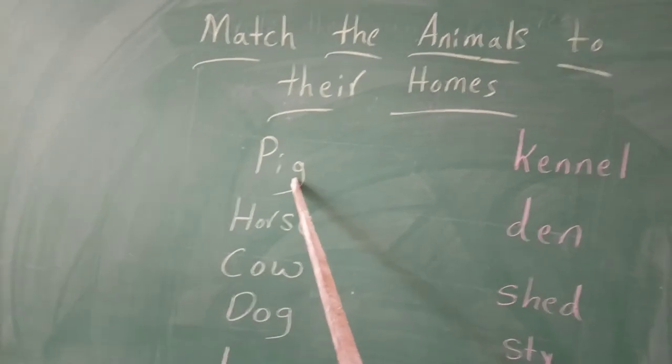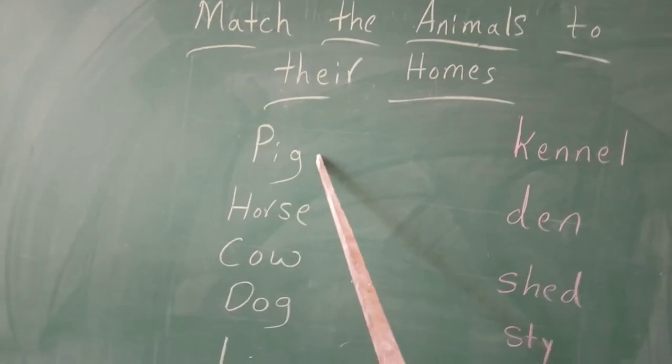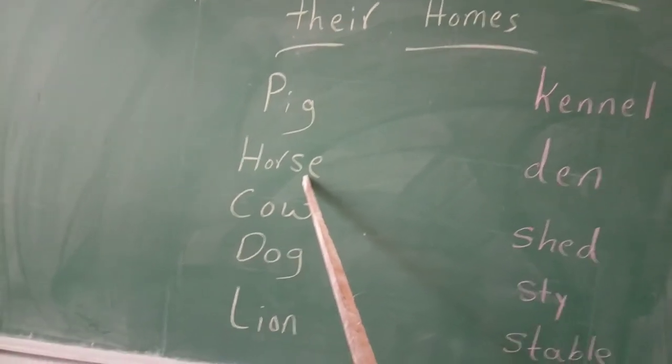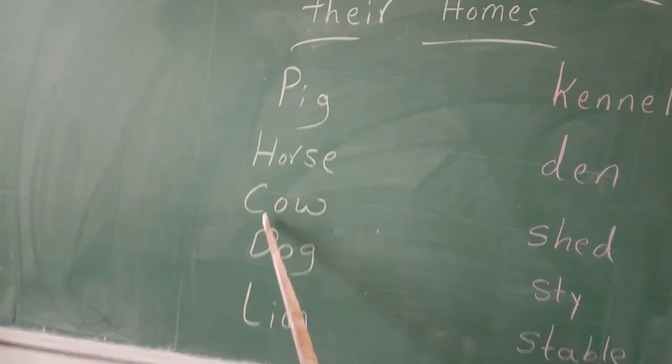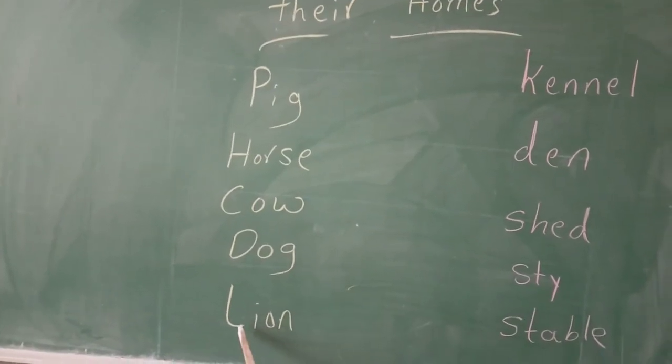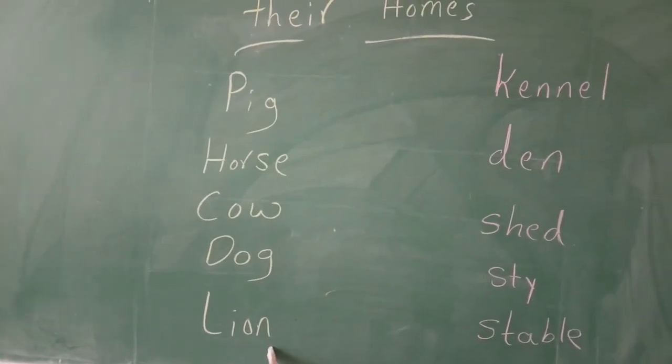Pig. What is the spelling? P-I-G, Pig. Horse, H-O-R-S-E, Horse. Cow, C-O-W, Cow. Dog, D-O-G, Dog. Lion, L-I-O-N, Lion.